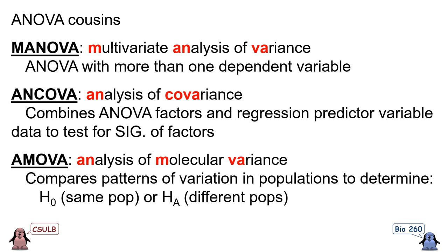The ANOVA technique can be expanded to analyze a wider variety of data. The MANOVA (Multivariate Analysis of Variance) is essentially an ANOVA with more than one dependent variable. The ANCOVA (Analysis of Covariance) combines the ANOVA approach with a regression that includes an additional continuous independent variable — used when you have a mix of continuous correlations and discrete categories. The AMOVA (Analysis of Molecular Variance) compares patterns of genetic variation in populations to determine whether they appear to be the same (indicating interbreeding) or different (indicating reproductively isolated populations), using genetic data instead of numbers.